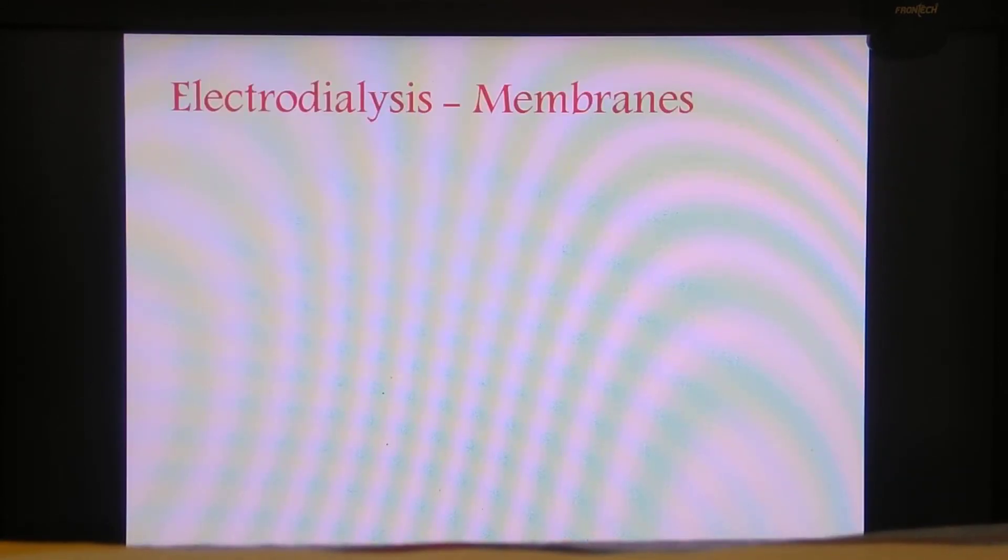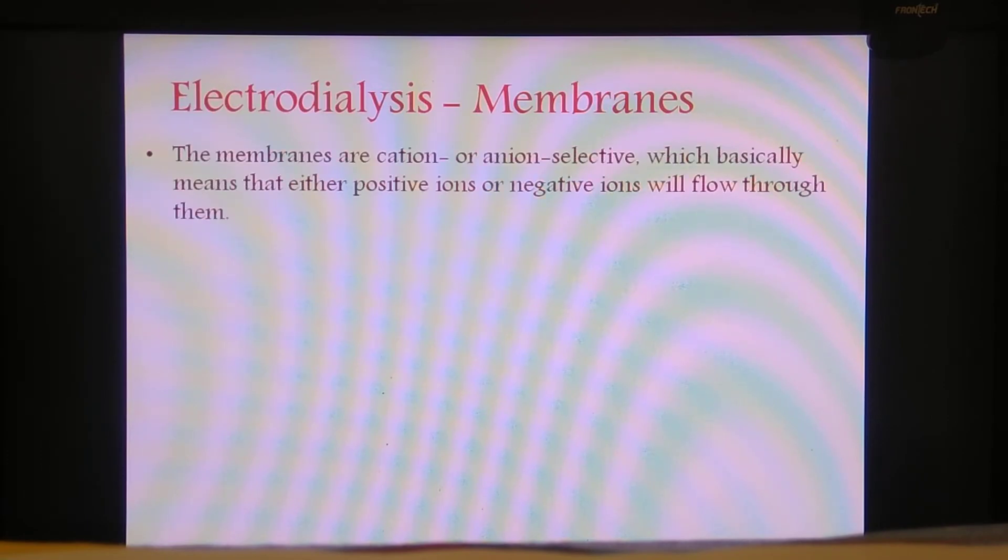How does this phenomena take place and what are the membranes present in Electrodialysis? In Electrodialysis, we come across two types of membranes which are specific to certain types of ions. Those membranes are the cation or anion selective membrane which basically means either the positive ions, that is cations, or the negative ions, that is anions, flow through them.